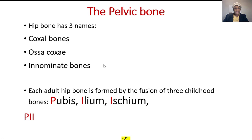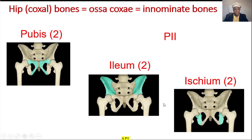The pelvic bone is divided into three parts: the pubis, ilium, and ischium. The pubis is anterior, ilium superior, and ischium posterior.